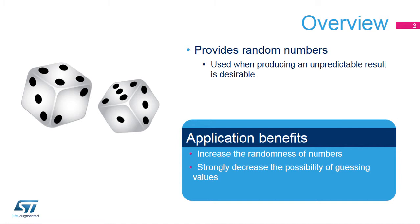The Random Number Generator, or RNG, integrated inside STM32 products provides random numbers which are used when producing an unpredictable result is desirable. Applications can benefit from the RNG to increase the randomness of numbers or to decrease the possibility of guessing certain values.